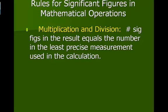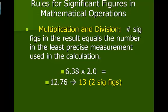Now, rules for mathematical operations. When you multiply and divide, the number of significant figures in the result equals the number in the least precise measurement used in the calculation. So for example, 6.38 times 2.0 gives us a value of 12.76. 6.38 has three significant figures. 2.0 has two significant figures, so our resulting answer should be 13, and that 13 has two significant figures.